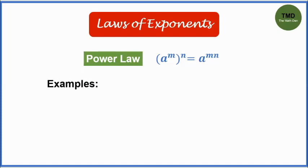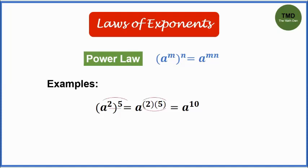Here are the examples. Example number 1: a squared raised to another exponent 5 is equal to a raised to 10. The exponents are multiplied. 2 times 5 is 10.